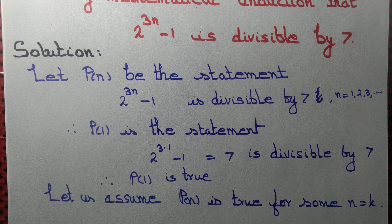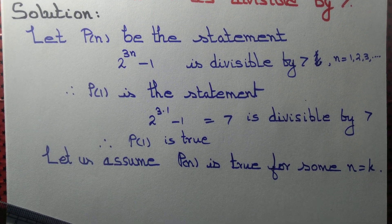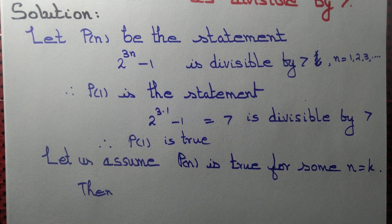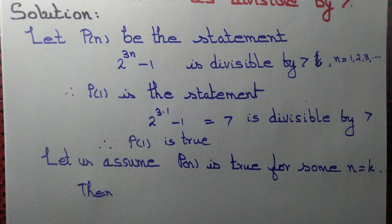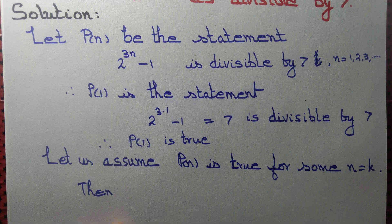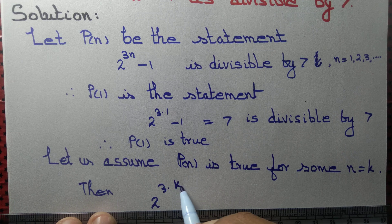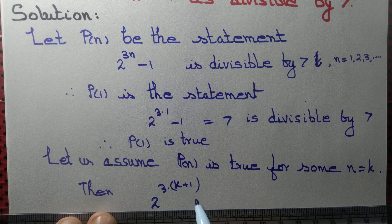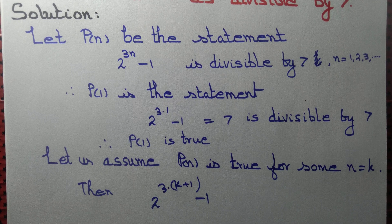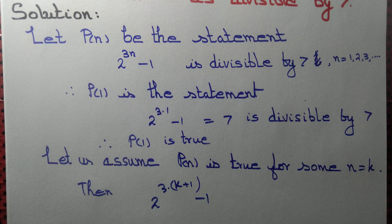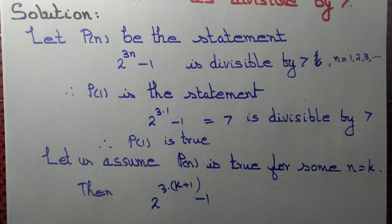Next, we will assume something to prove something. We assume that P(n) is true for some n equal to k. Then we need to show that whenever P(k) is true, P(k+1) is also true. That will solve our purpose. If we write n equal to k plus 1, then we have 2 to the power 3 into (k+1) minus 1.